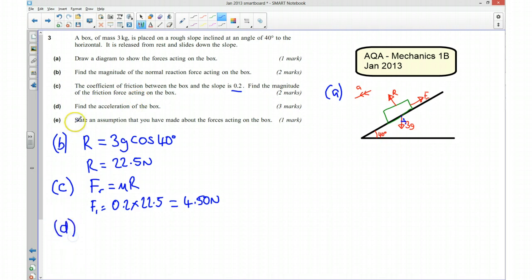Part D says find the acceleration of the box. Okay, so, our acceleration is acting downwards. And we've got a frictional force acting that way. And we've got some component of the weight that's going to be acting down the slope. So if I resolve it parallel to the slope, I'm going to get... And this is going to be my positive direction, because that's the direction of motion. So I'm going to have... And we had 3G cos 40 there. This is going to be 3G sin 40.